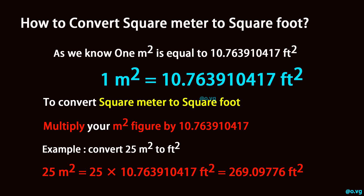Example: convert 25 square meter to square foot. 25 square meter is equal to 25 times 10.763910417 square foot, which equals 269.09776 square foot.